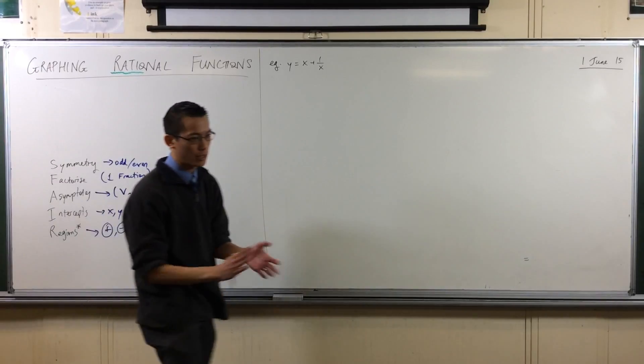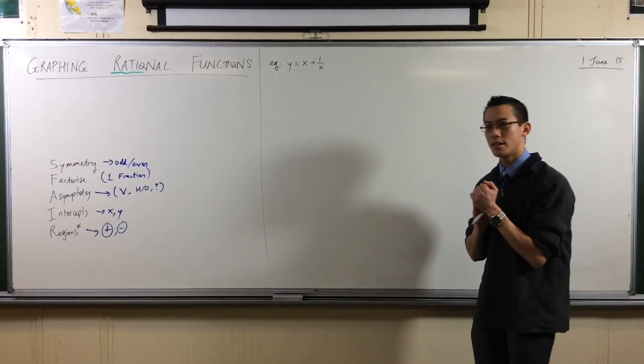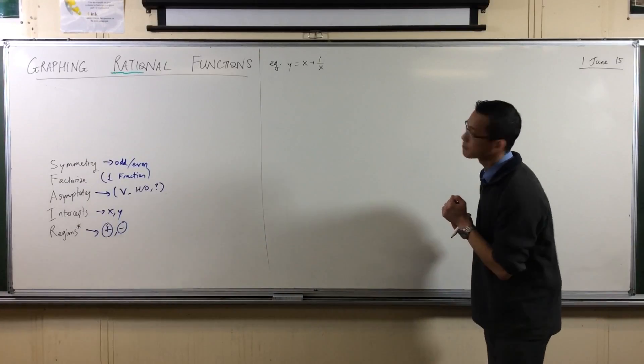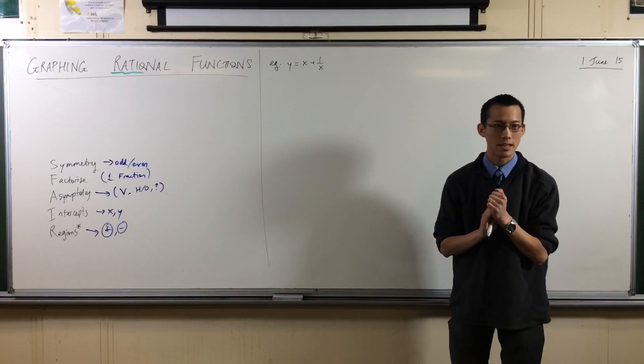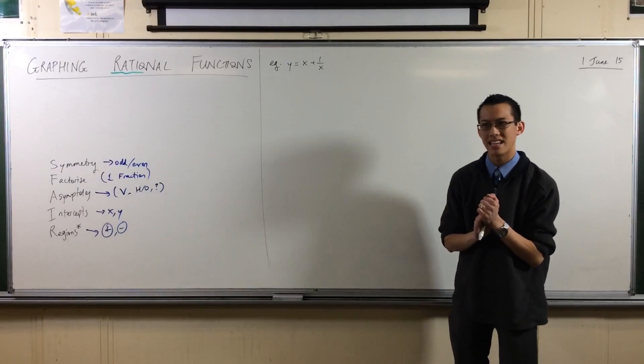So to begin with, symmetry. Have a look at this function: Y equals X plus 1 on X. Does it have any kind of symmetry? Any takers? What do you think? You think it's odd. Why might we think that it's odd?